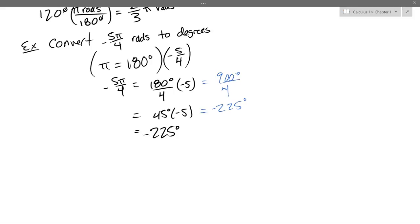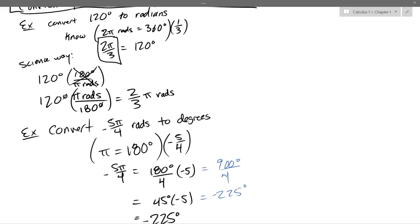We finished conversions — degrees to radians and radians to degrees. That's all the angle conversions we're going to do. Now we'll define our trig functions.